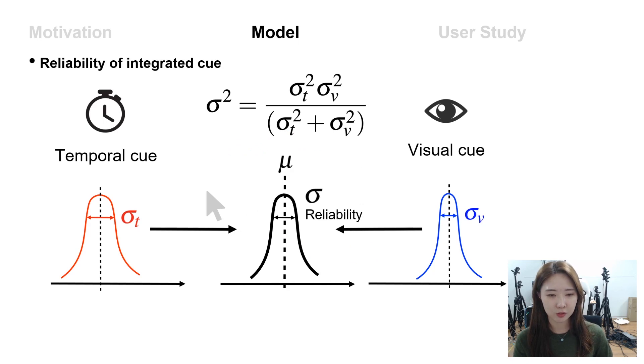According to the cue integration theory, humans encode the cues in a statistically optimal way through the maximum likelihood estimation process, and the reliability of integrated cue can be calculated through this formula. We assume the mu values from the two cues are the same.